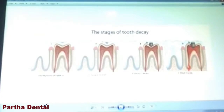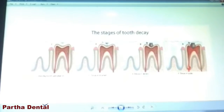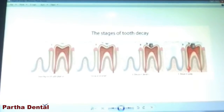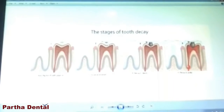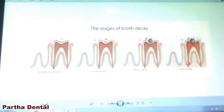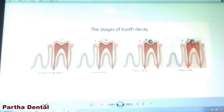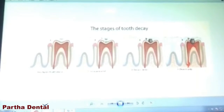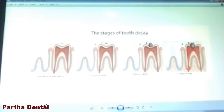The second picture shows that the cavity is slightly started in the enamel. This is the topmost layer of the tooth, which is called the enamel. This layer of the tooth structure has got some cavities — this is the first stage.